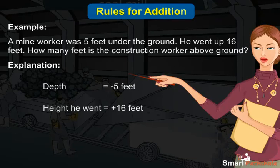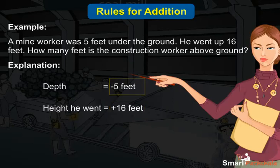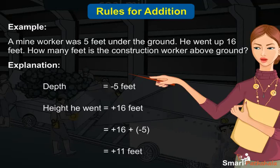Since he went 16 feet above, we have to add plus 16 feet to minus 5 feet. The sum of plus 16 and minus 5 is plus 11 feet.